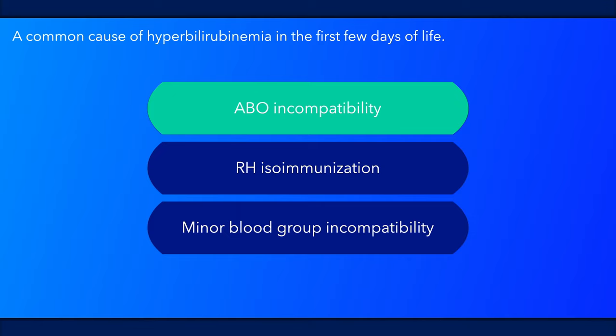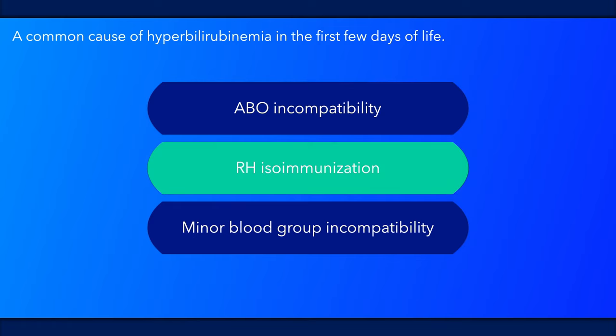ABO incompatibility can occur following any pregnancy in a type O mother, including the first pregnancy. However, it only actually happens in a minority of cases. The prophylactic use of RH immunoglobulin has decreased the incidence of hemolysis due to RH incompatibility.